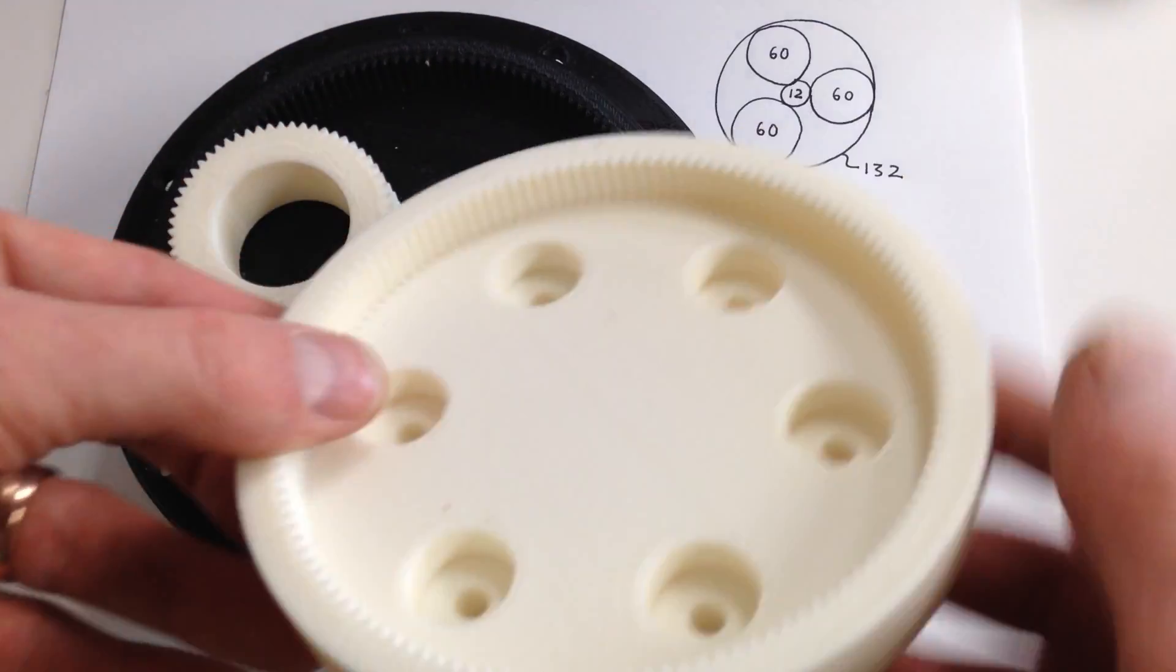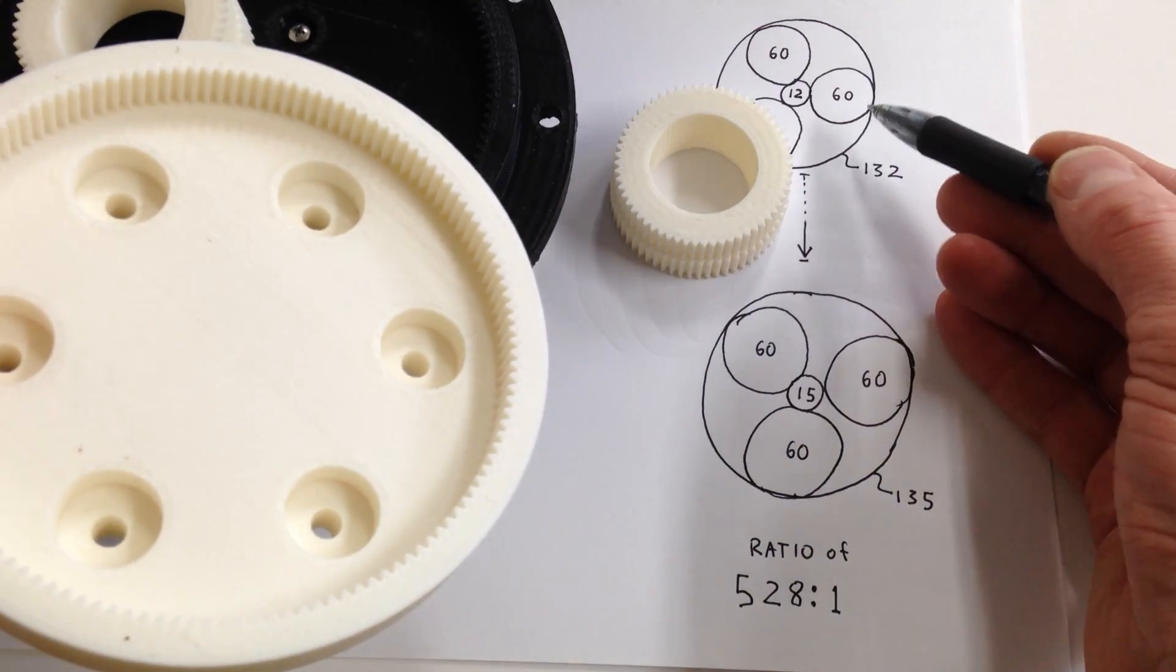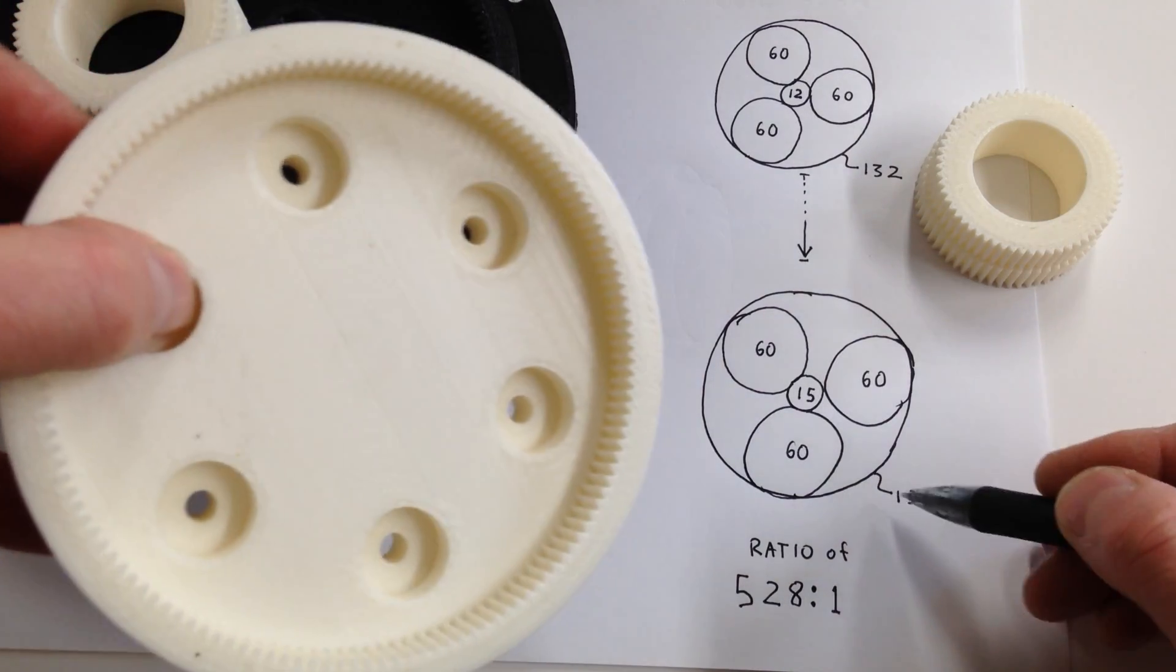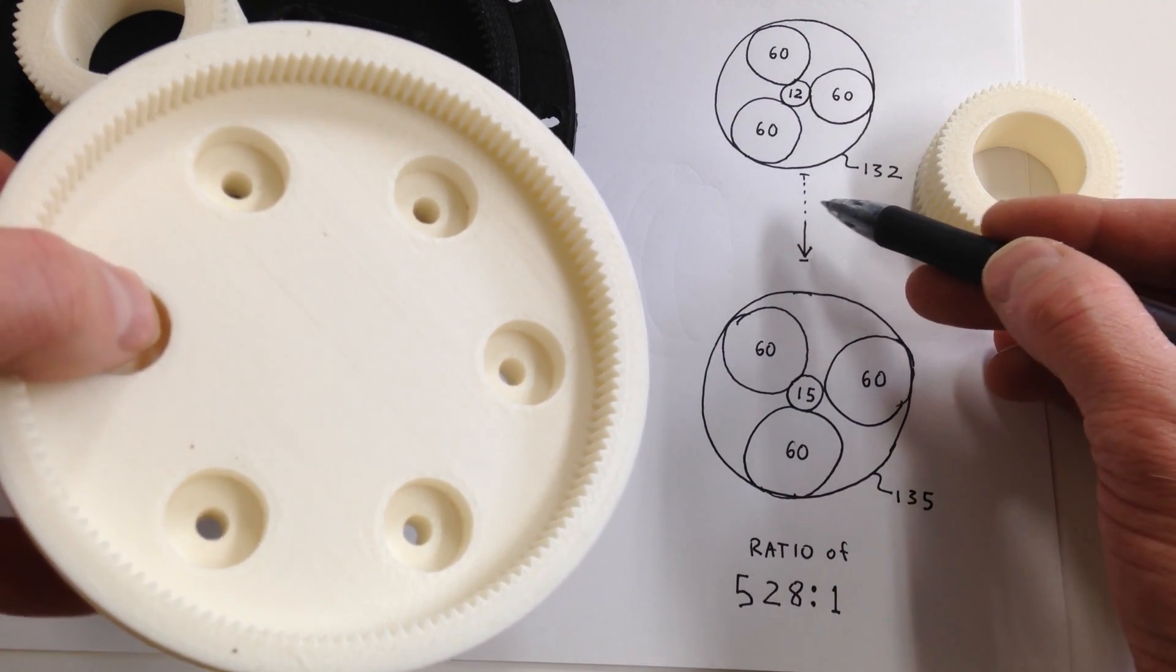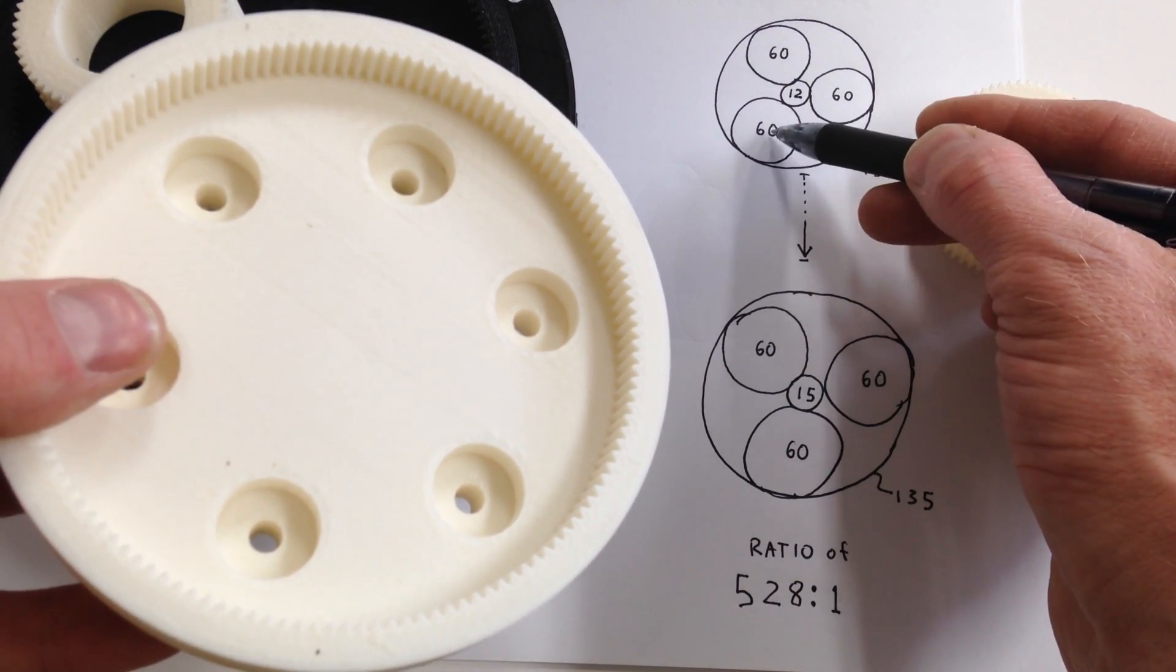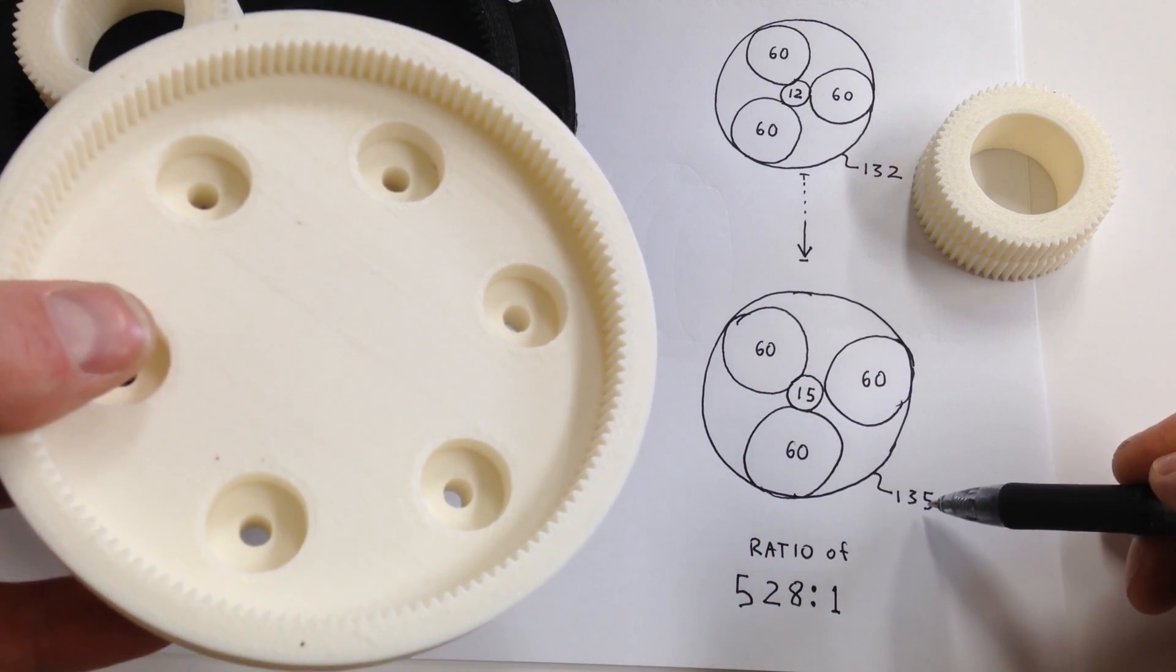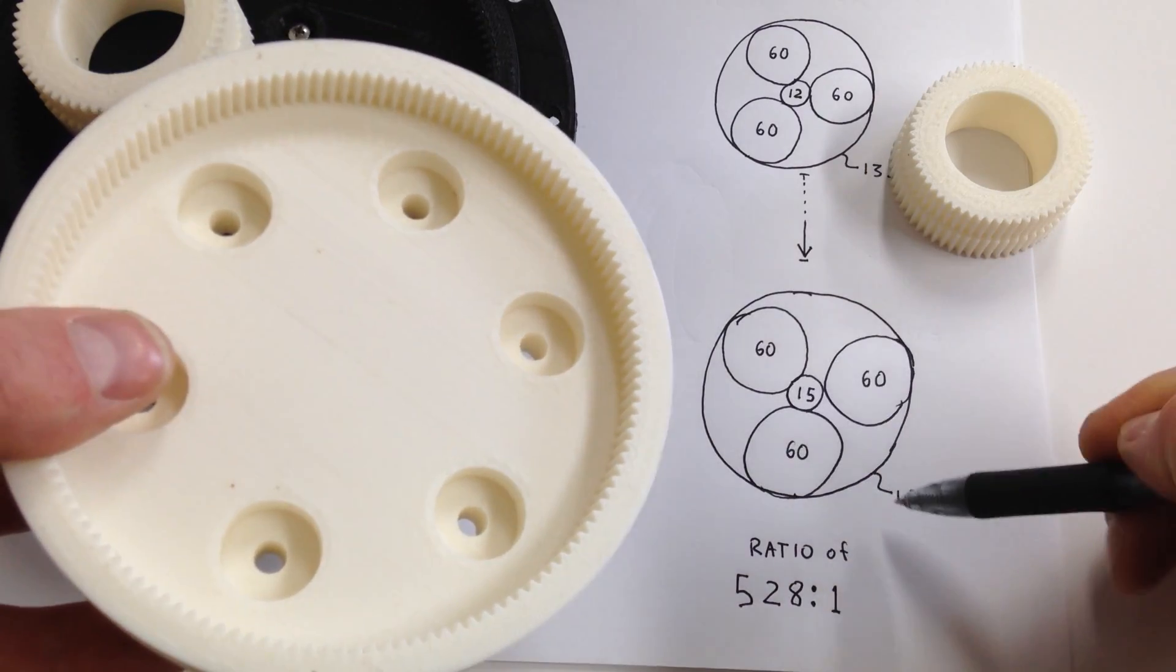And lastly, annulus number two. Oh, by the way, each of these compound planets has 60 teeth on the top and 60 teeth on the bottom. The bottom annulus, or the output annulus, has 135 teeth, top one has 132. You can think of the high ratio as owing to the fact that every time one of these planets goes all the way around, the second annulus has only advanced by a matter of three teeth. So an entire revolution of a planet advances it by three teeth.